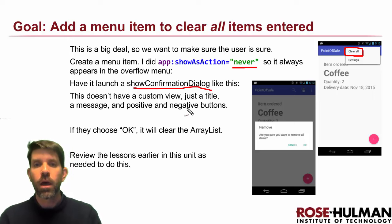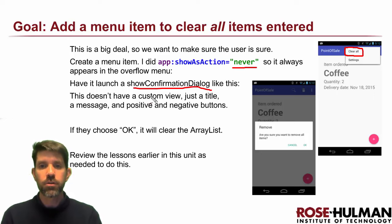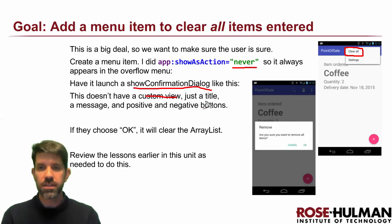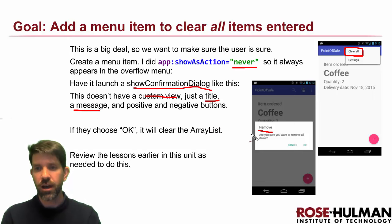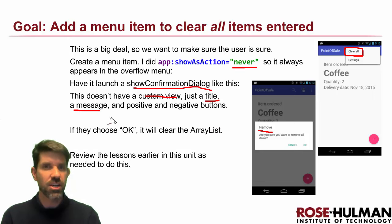Notice there's no custom view. The four things are: one, we're going to set the title — the title is going to be 'Remove'. I think I have a string there for you already. The next one is a message.